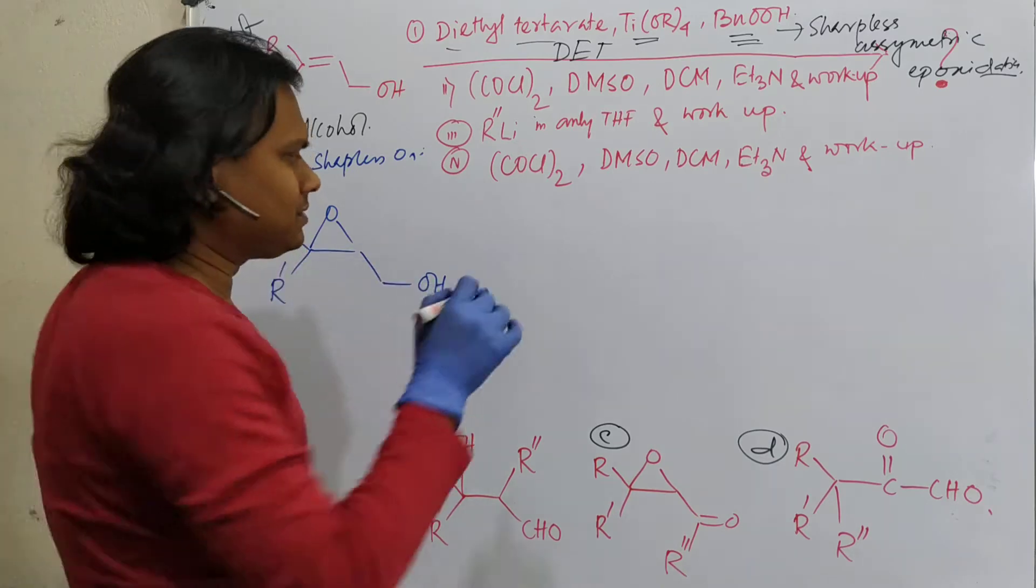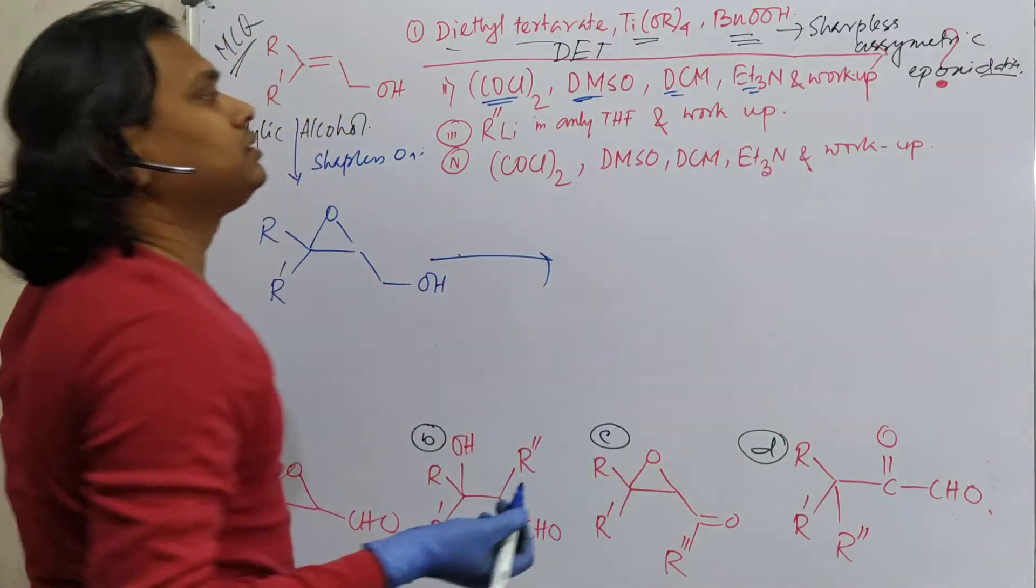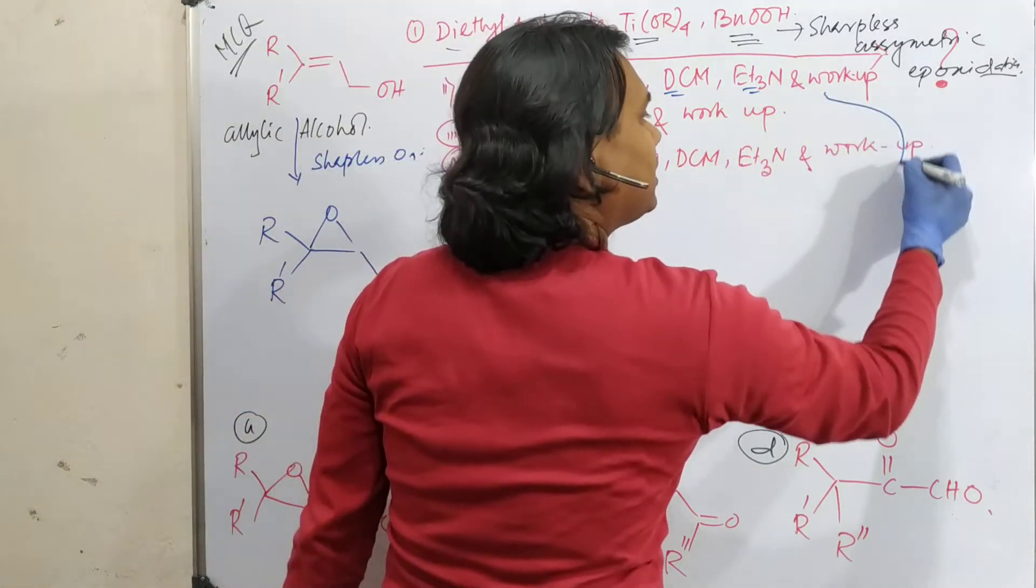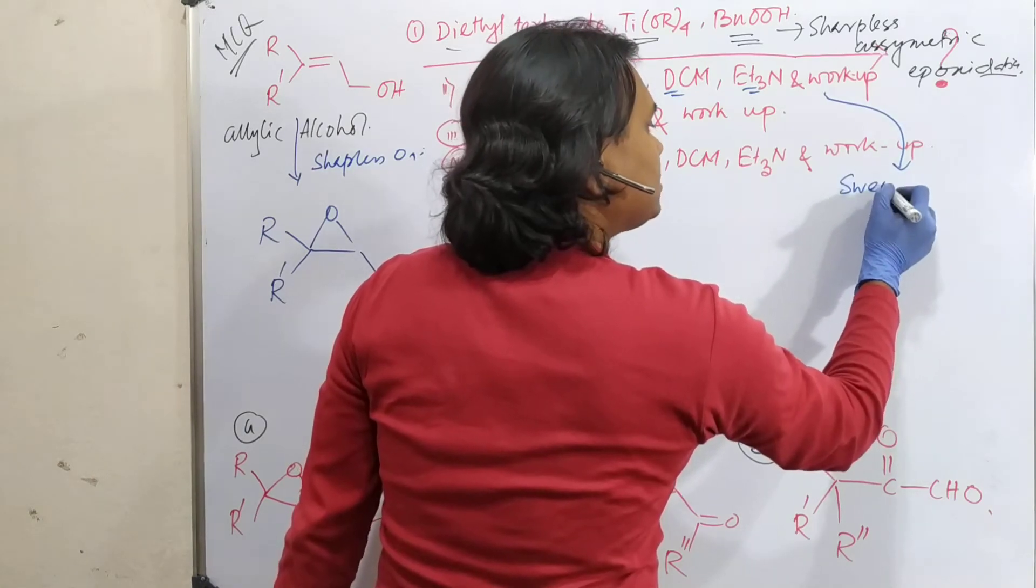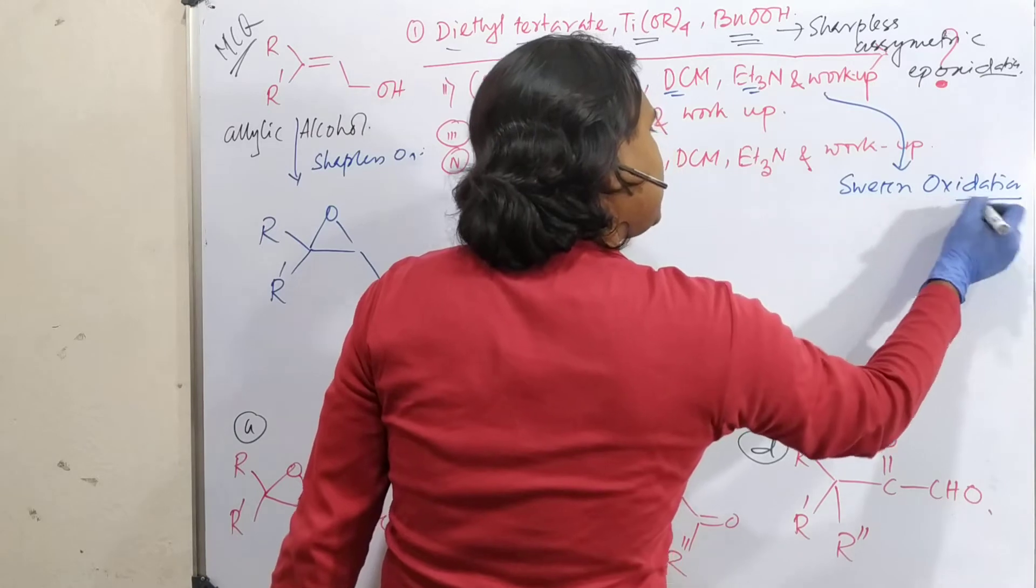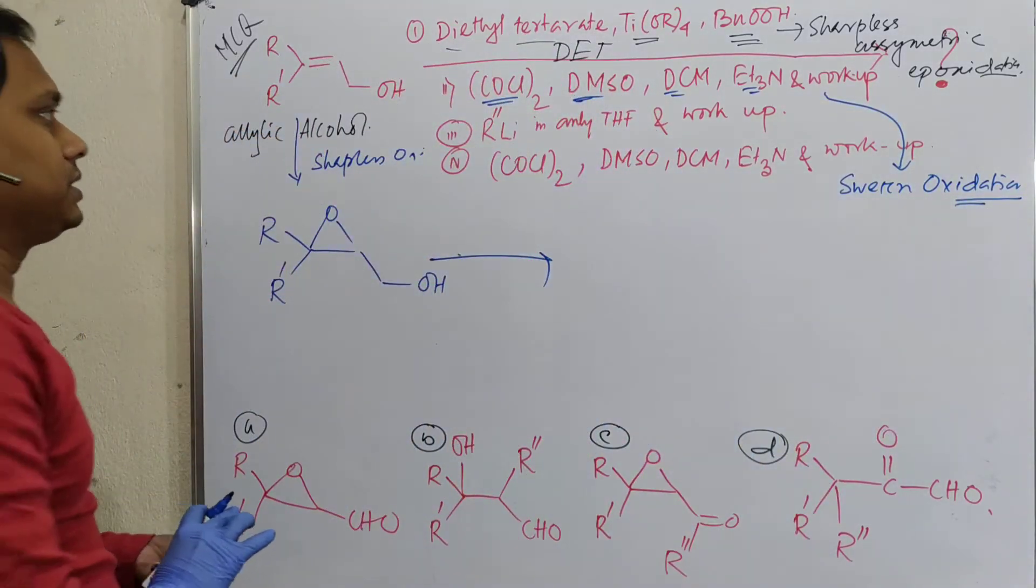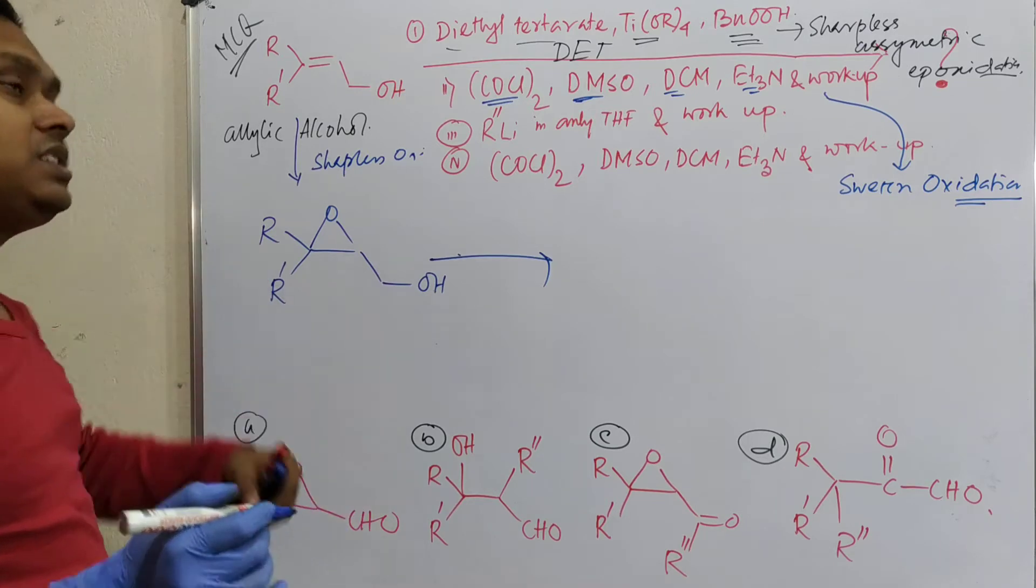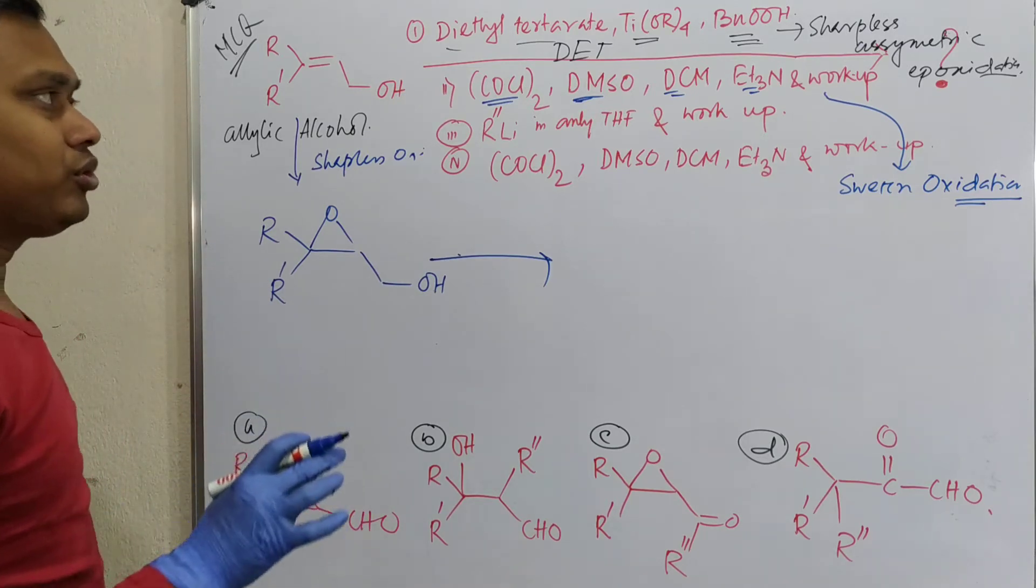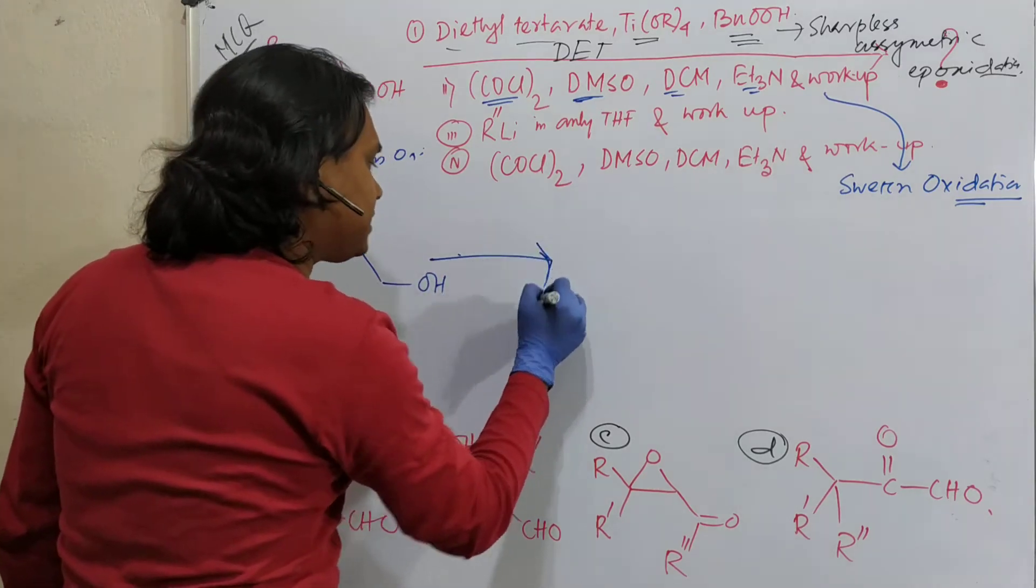Now next step, COCl2, DMSO, DCM, triethylamine. What is this? This is nothing but Swern oxidation. I shall very soon upload a dedicated lecture on Swern oxidation. So you can study from there. So what does it result? It selectively oxidizes alcohol into aldehyde. I am not going to make any mechanism of any step. Please visit dedicated lectures for mechanism.